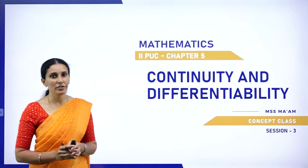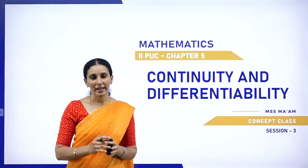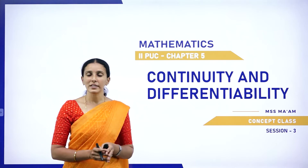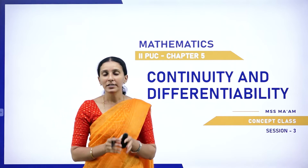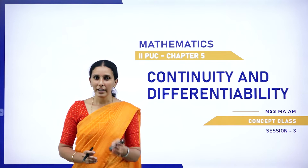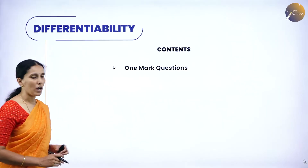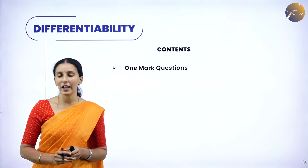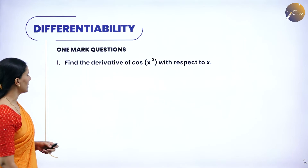The chapter continuity and differentiability carries around 20 marks in your examination. There will be one mark, two mark, three mark, four mark, and five mark questions — all types of questions under each section. In this session, we will discuss only one-mark questions: finding the derivatives of given functions. Let's see the first question.